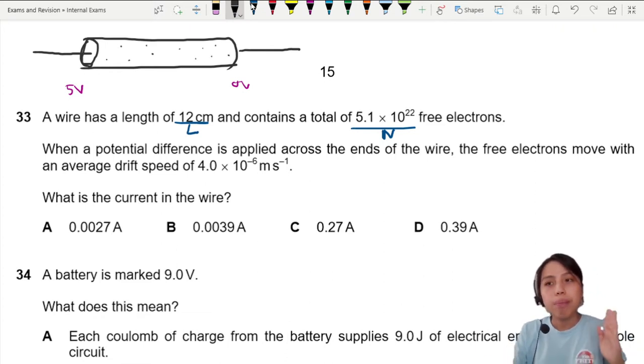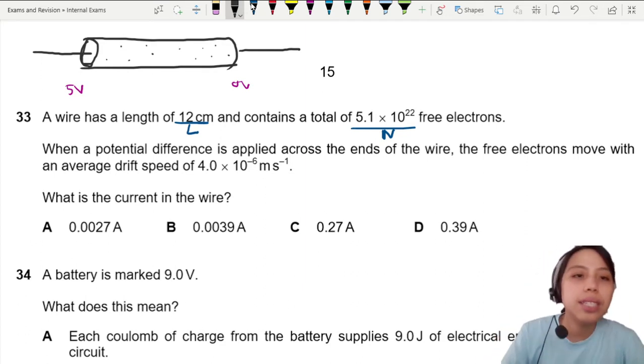They're just chilling there, but when they have potential difference they will start to be affected. So then these electrons will start to drift. That's why we have the drift velocity.